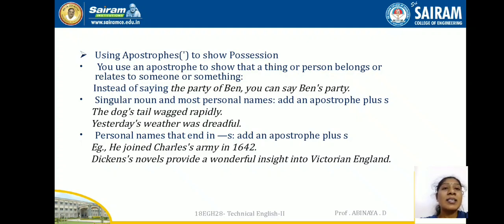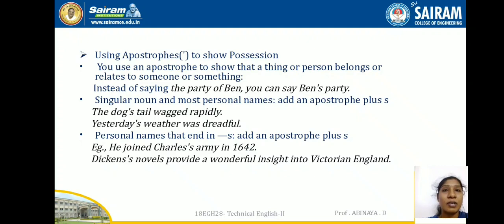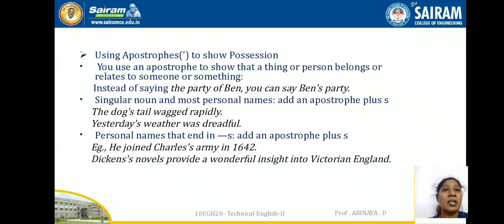For personal names that end in S, also add apostrophe plus S. For example: 'He joined Charles's army.' or 'Dickens's novels provide a wonderful insight into Victorian England.' Even though Charles and Dickens already end in S, you still add apostrophe plus S to show possession.